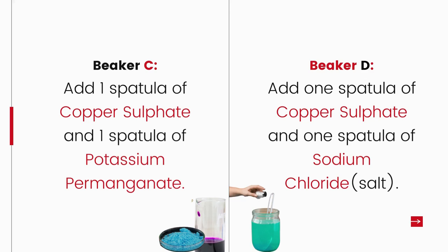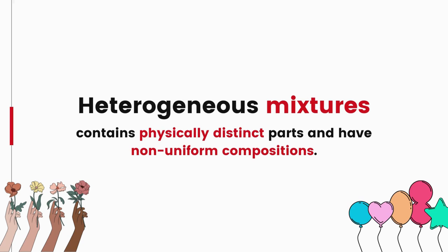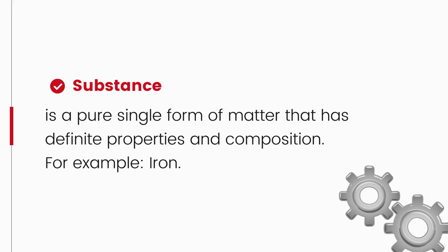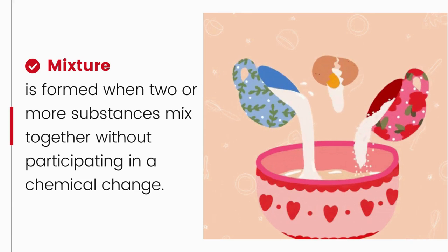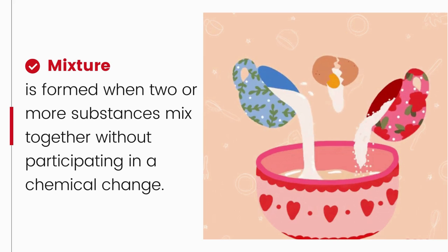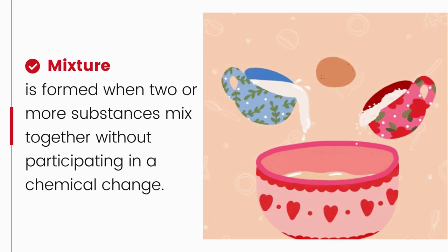Now take two more beakers C and D, add different amounts of copper sulfate and potassium permanganate or common salt (sodium chloride), and mix them. Beakers C and D will obtain physically distinct parts with non-uniform compositions — such mixtures are called heterogeneous mixtures. Examples include iron filings and salt, salt and sulfur, and oil and water. Remember: a substance is a pure single form of matter with definite properties and composition, for example iron. Mixtures form when two or more substances mix without a chemical change, and need not mix in a definite ratio.